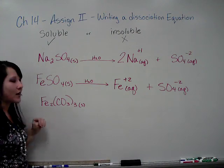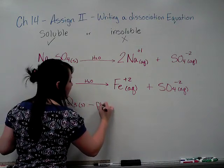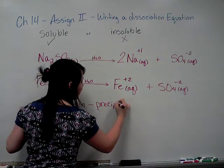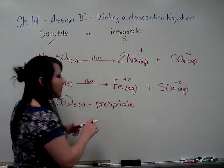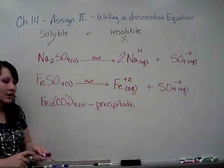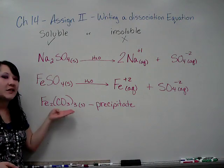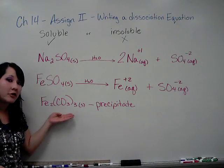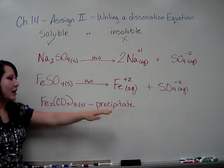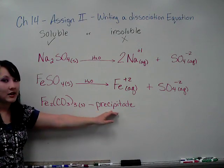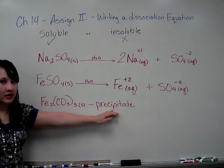And since you can't write that, the only thing you could do is label it as a precipitate. Keeping in mind that dissociation means breaks apart due to dissolving. And if it's insoluble, it can't dissolve, so it can't break apart. And so it'll stay as a solid in the solution, and so we call that a precipitate.